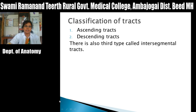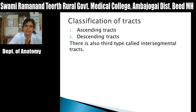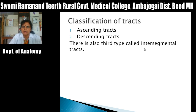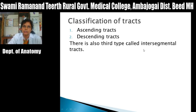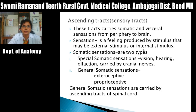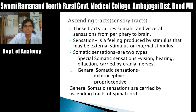Classification of tracts: they are divided into ascending tracts and descending tracts. There is also a third variety called intersegmental tracts, which are only present in the spinal cord. These intersegmental tracts consist of both ascending and descending fibers and connect adjacent segments of the spinal cord. Now we will see about ascending tracts, also called sensory tracts or sensory pathways.